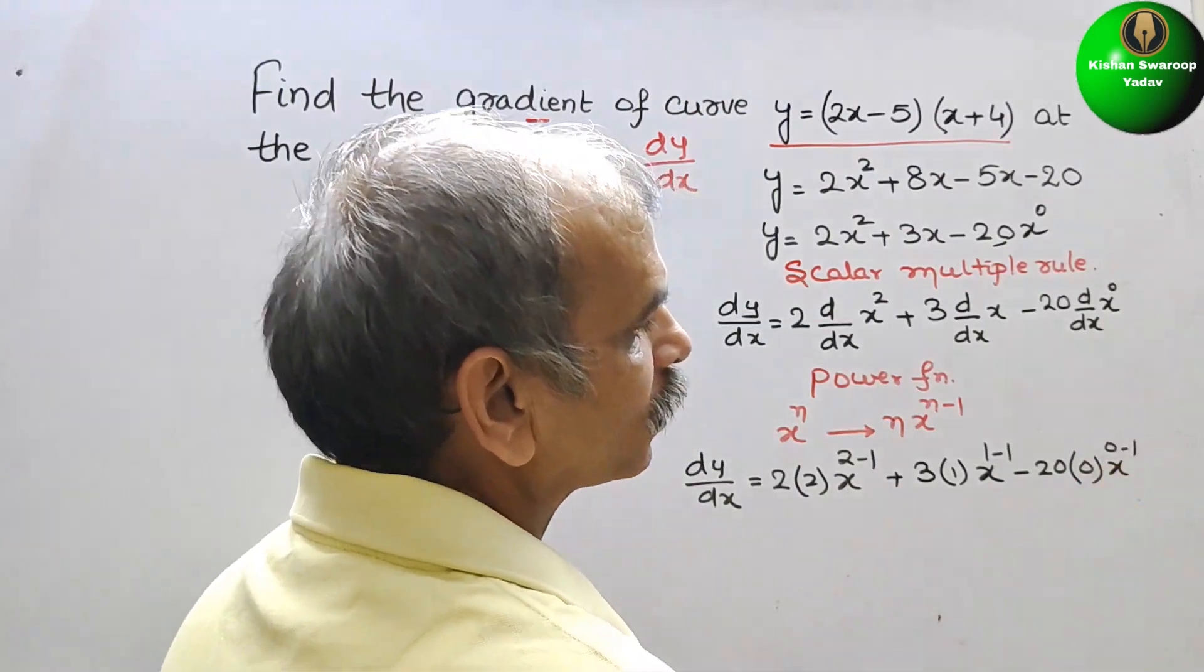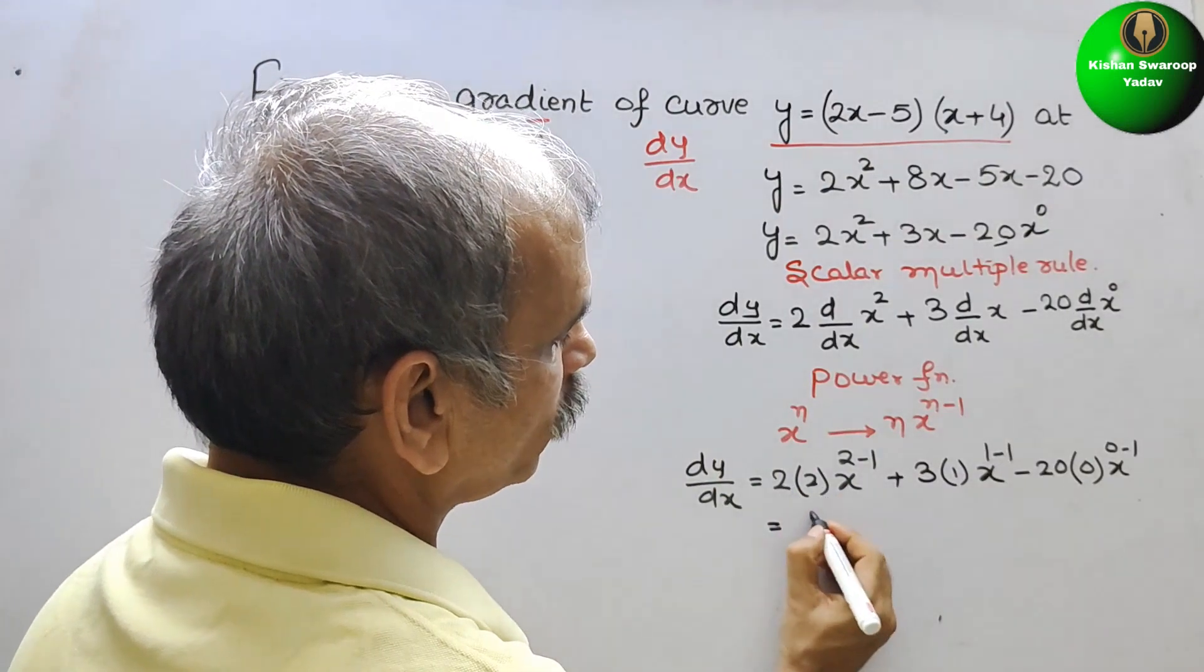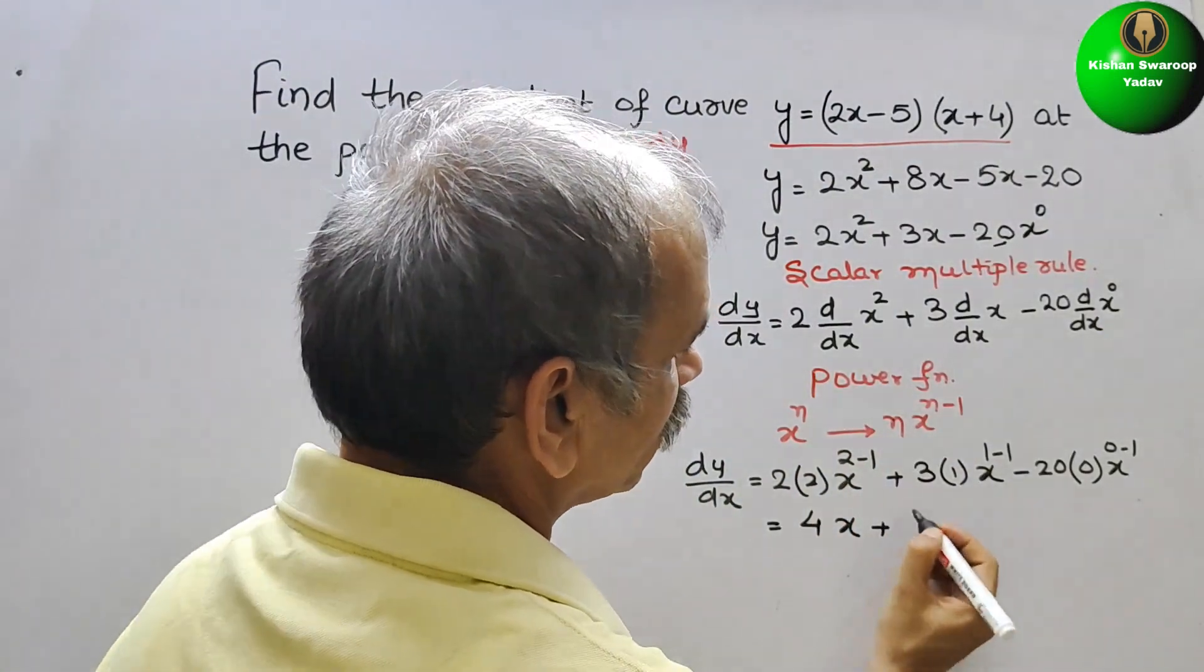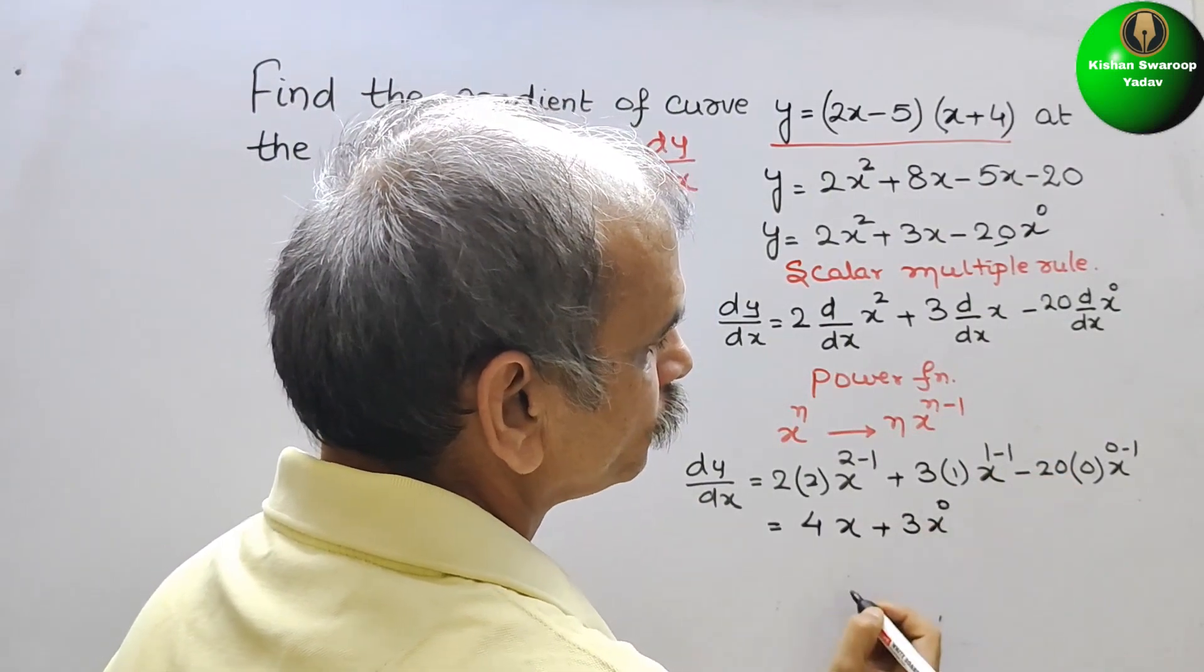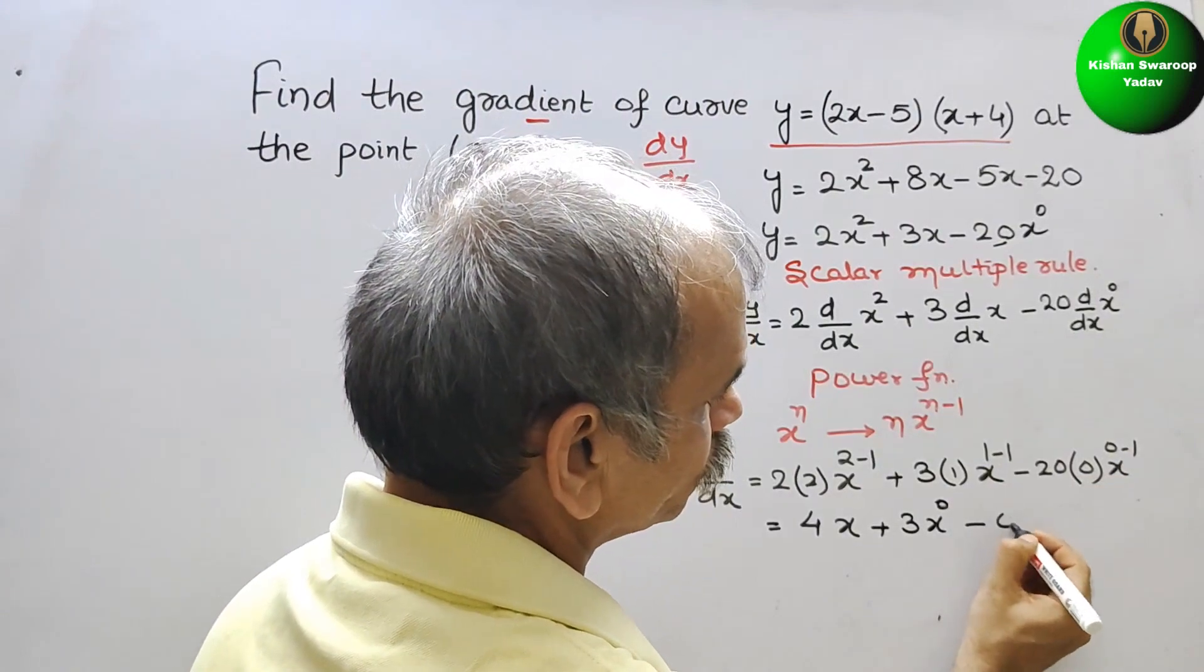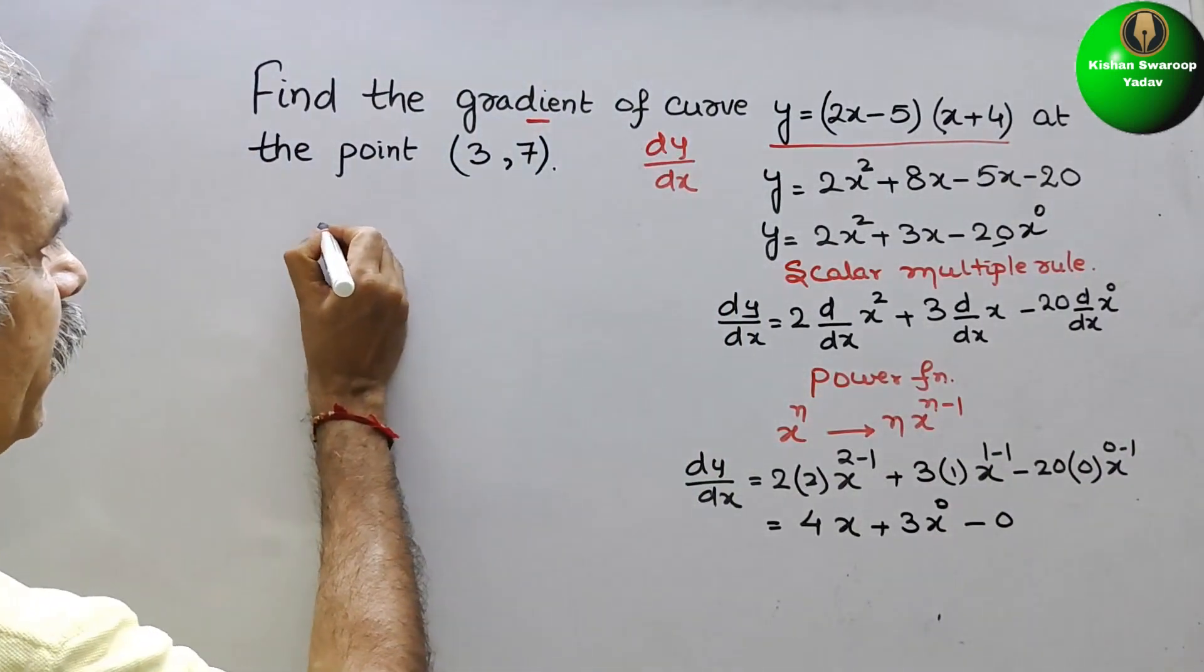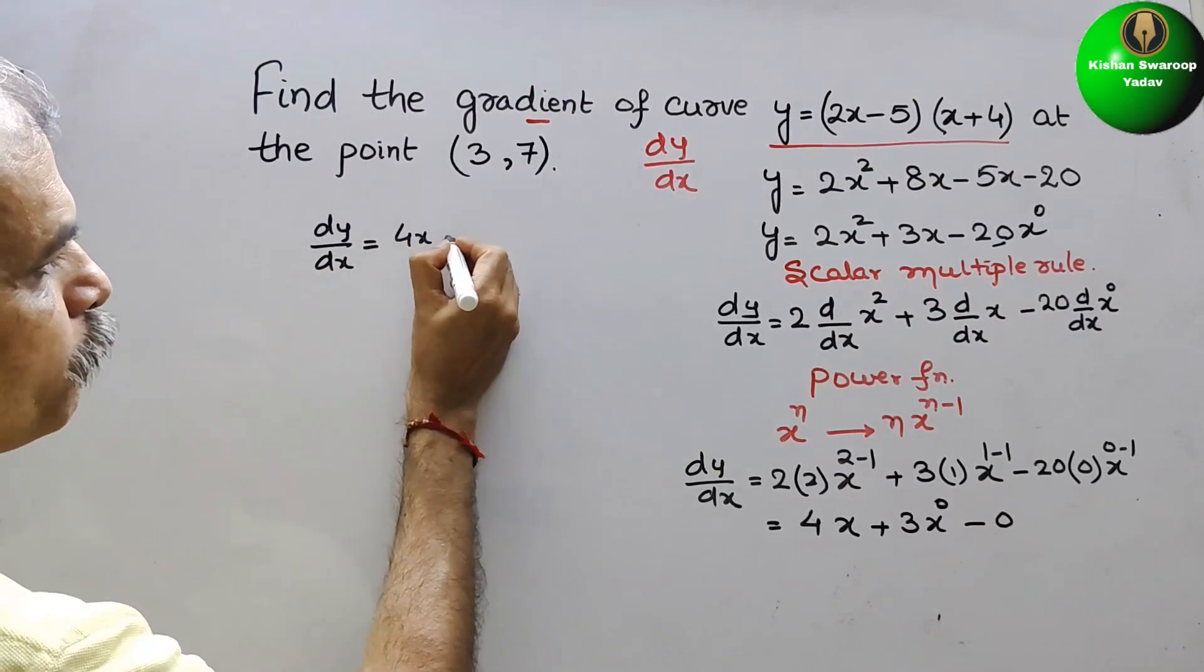So we have to solve this. So this is nothing but 2 into 2 is 4x. 2 minus 1 is 1. Plus 3 x to the power of 0. And this is 0. So therefore x to the power of 0 is 1. So we will get dy by dx is equal to 4x plus 3.